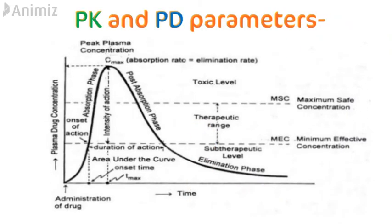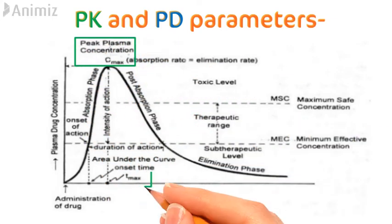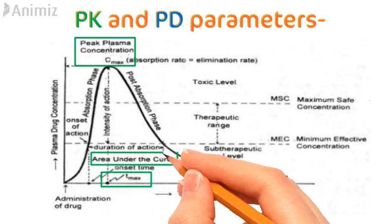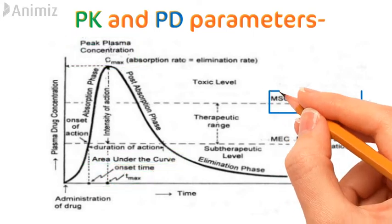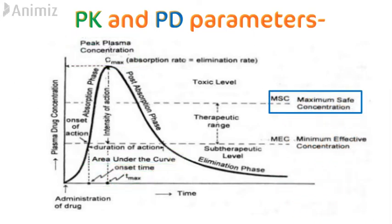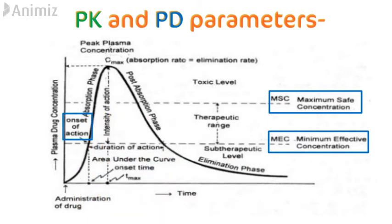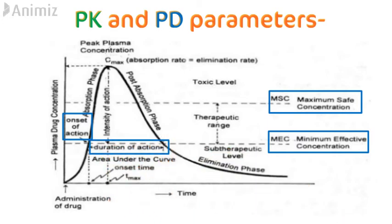Now let's look at pharmacokinetic and pharmacodynamic parameters obtained from the plasma concentration vs. time graph. Pharmacokinetic parameters include peak plasma concentration (Cmax), Tmax which is the time required to reach peak plasma concentration, and the area under the curve (AUC). Cmax and Tmax describe the rate of absorption, while AUC describes the extent of absorption. Pharmacodynamic parameters include maximum safe concentration above which are toxic levels, minimum effective concentration below which are subtherapeutic levels, and the therapeutic range between them. We also get onset of action and duration of action, which is the time the concentration remains within the therapeutic range.